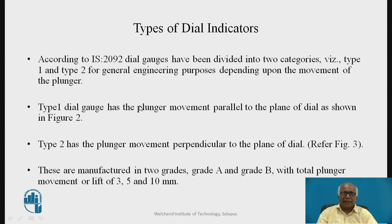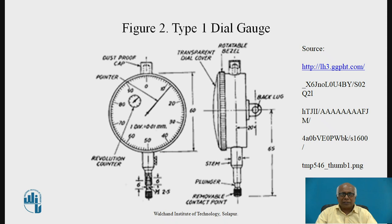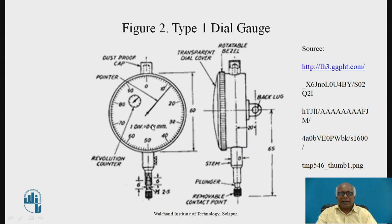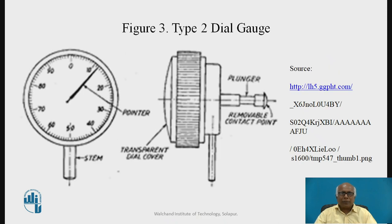Type 1 dial gauge has the plunger movement parallel to the plane of the dial, as shown in figure 2. In type 2, the motion of the plunger is perpendicular to the dial.